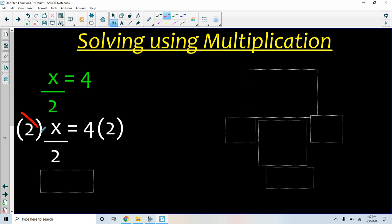This 2 here and that 2 right there makes 1, so we have 1x, just like in the previous page, equals 8. 4 times 2 is 8.